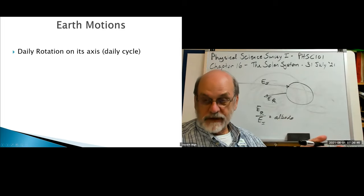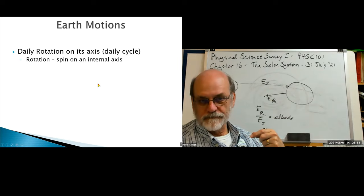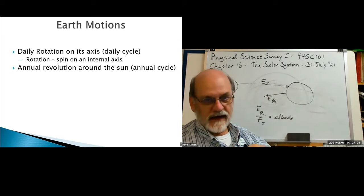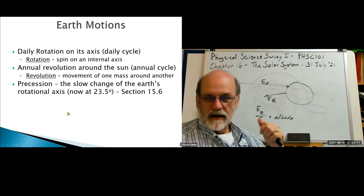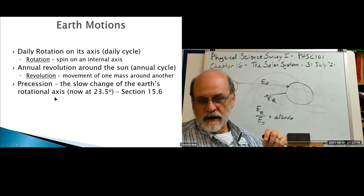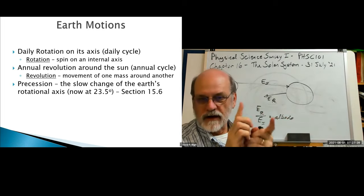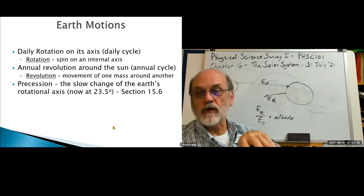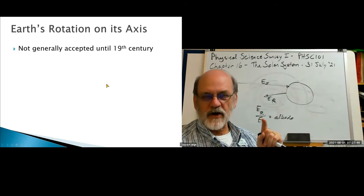Earth moves in different ways: it rotates around its axis, giving us a daily cycle, and it revolves around the sun, giving us an annual cycle — both repeat infinitely. The Earth's rotational axis is set at 23.5 degrees, but there's a wobble — the angle precesses, pointing in different directions over long periods of time, though that precession will eventually repeat.